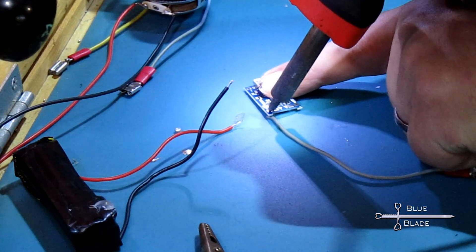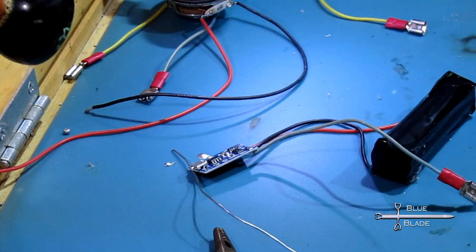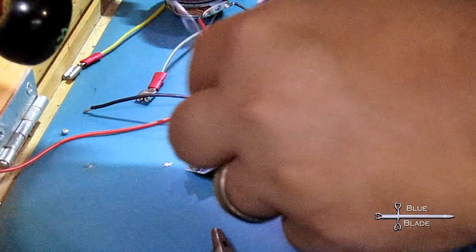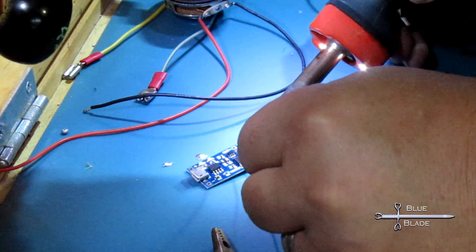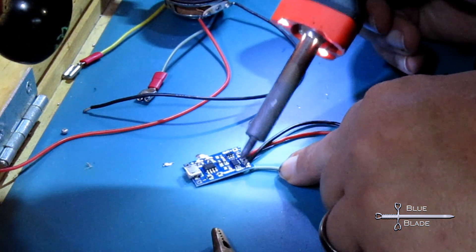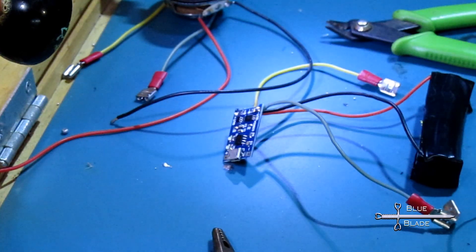Now repeat this process for the USB charge board. Solder the remaining two leads with the spade clips to the outside holes. These will connect to the switch and power the MP3 player. Then the two wires from the battery connect to the two inner holes. Make sure to connect the positive of the battery to the hole marked plus and the negative to the minus.